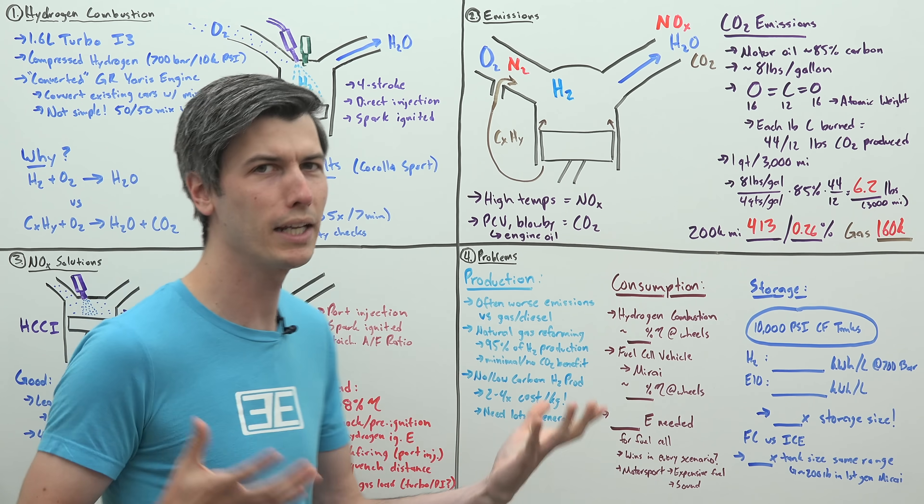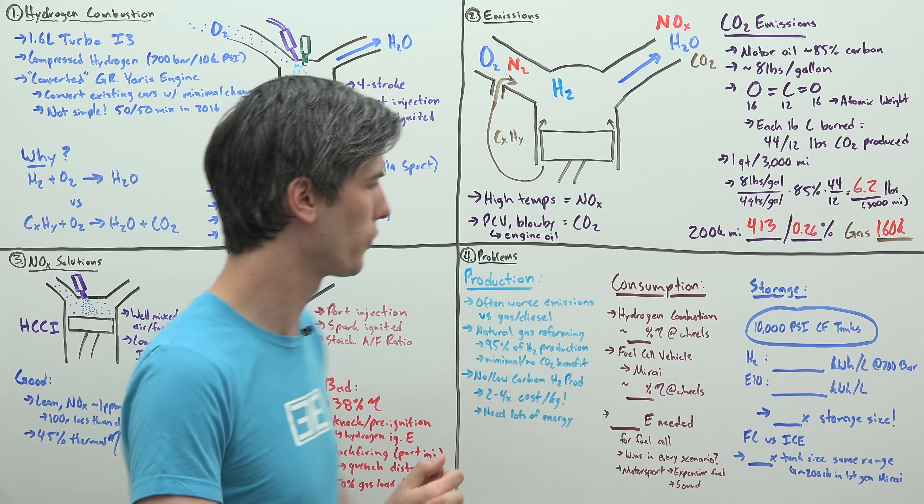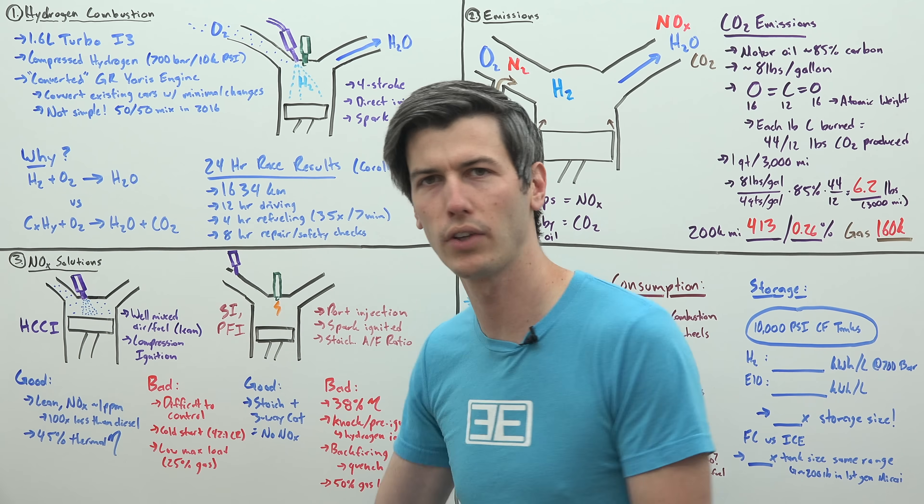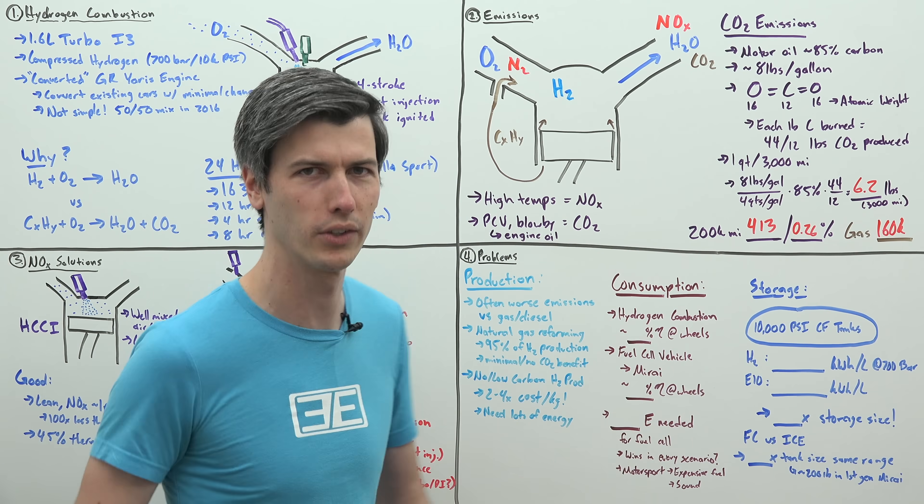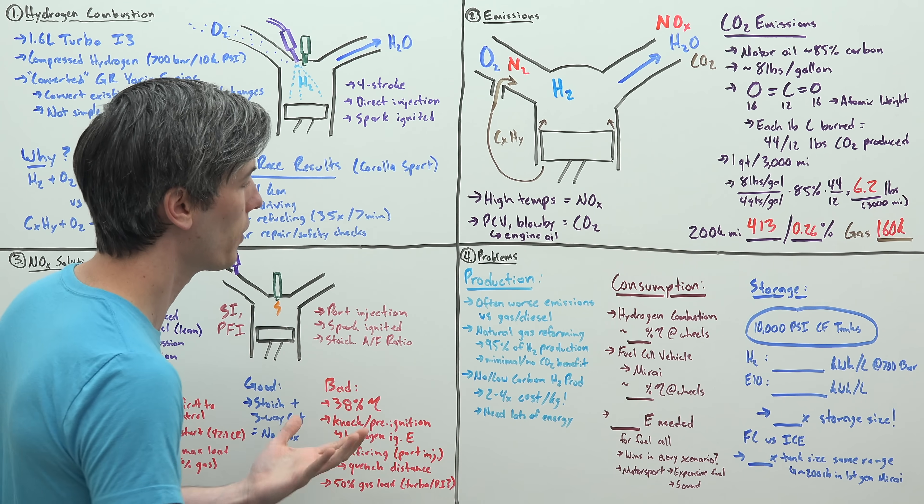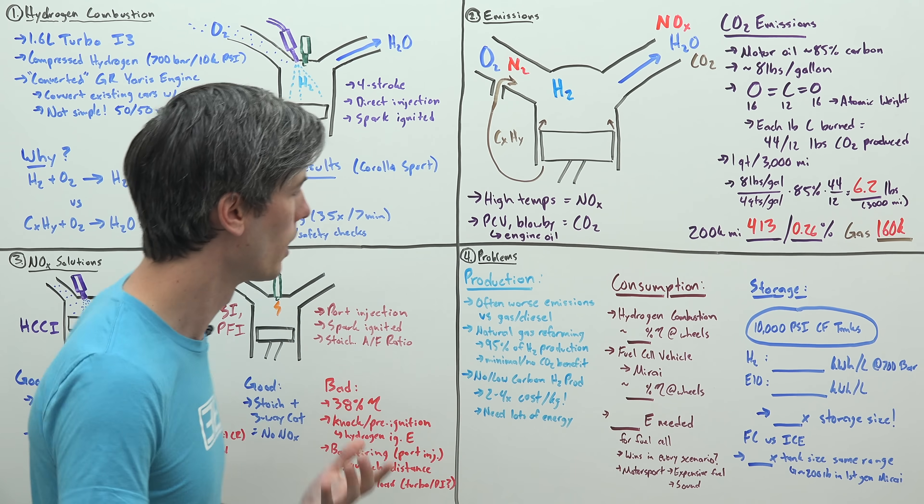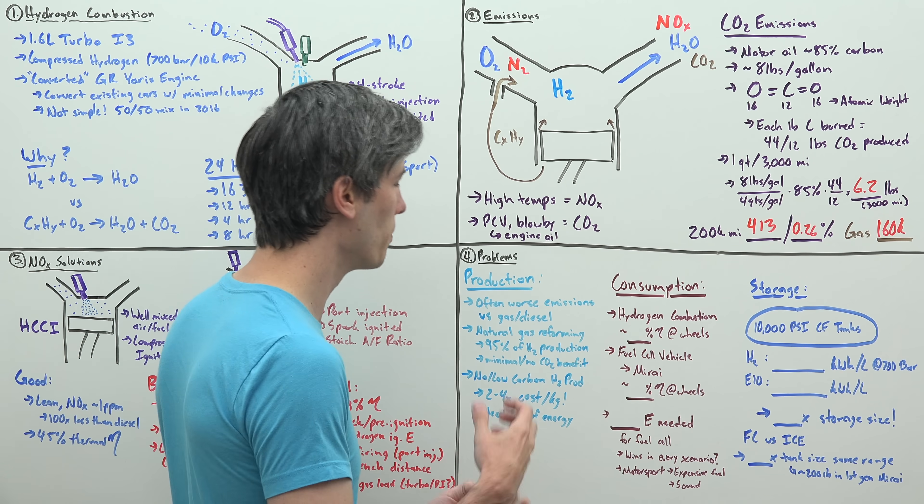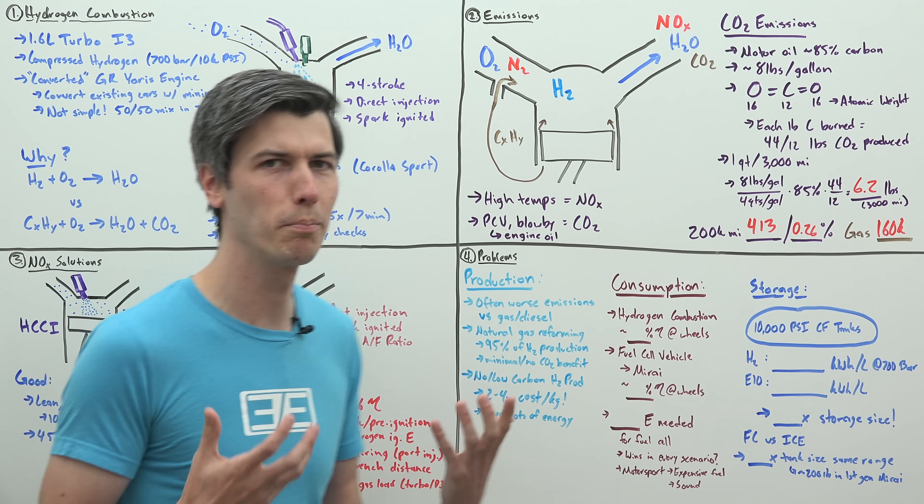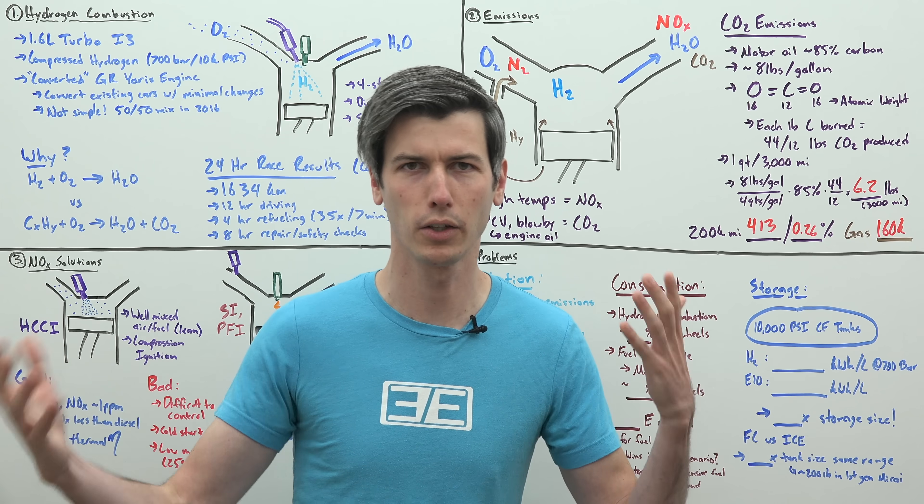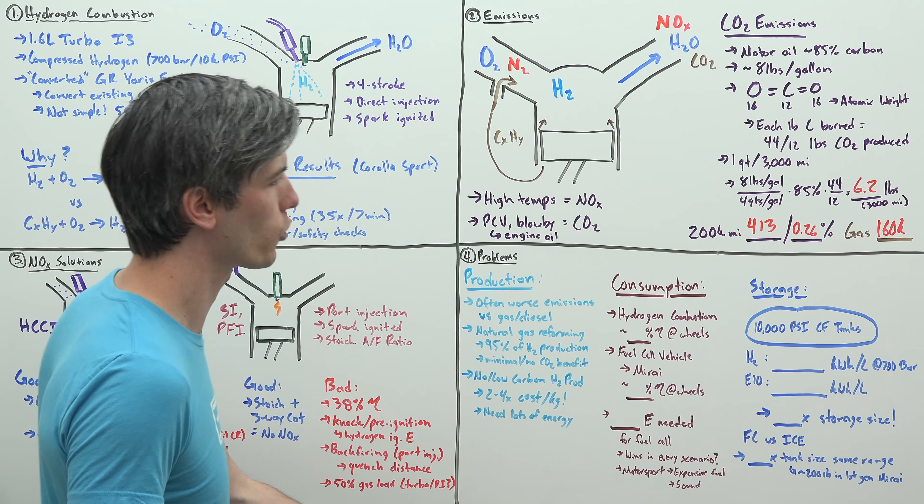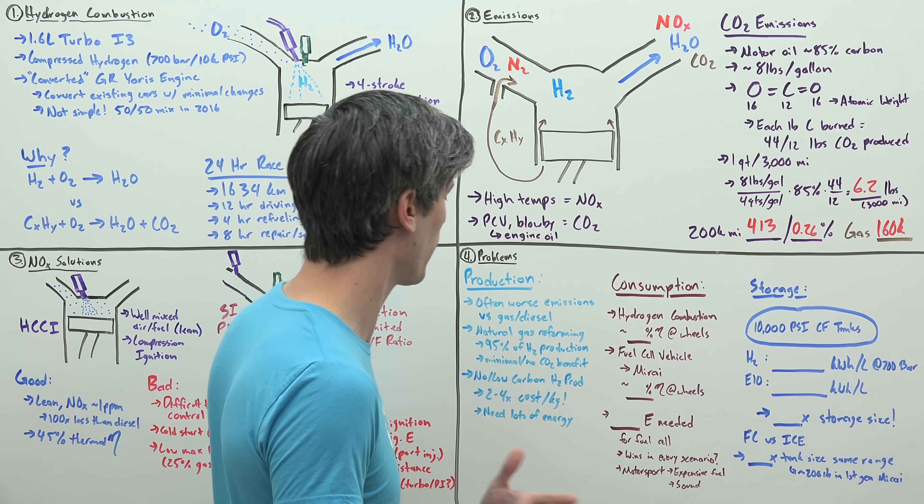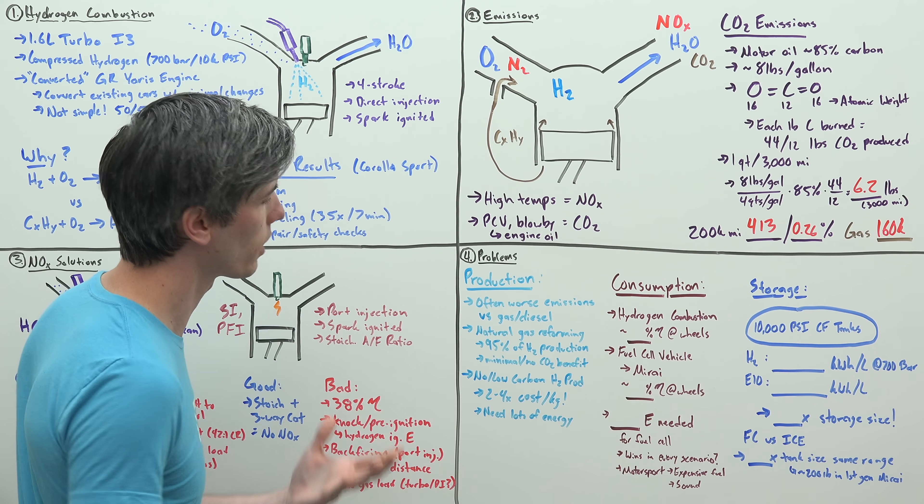There's many ways to produce hydrogen fuel. Many of them end up being worse from an emission standpoint than just using gasoline or diesel. Today, about 95% of hydrogen production is done by using natural gas reforming. And there's minimal to no CO2 emission benefit of doing so. I found studies that are on both sides of the fence. But basically, if you're using natural gas to create that hydrogen, then you're not really benefiting from a carbon standpoint.